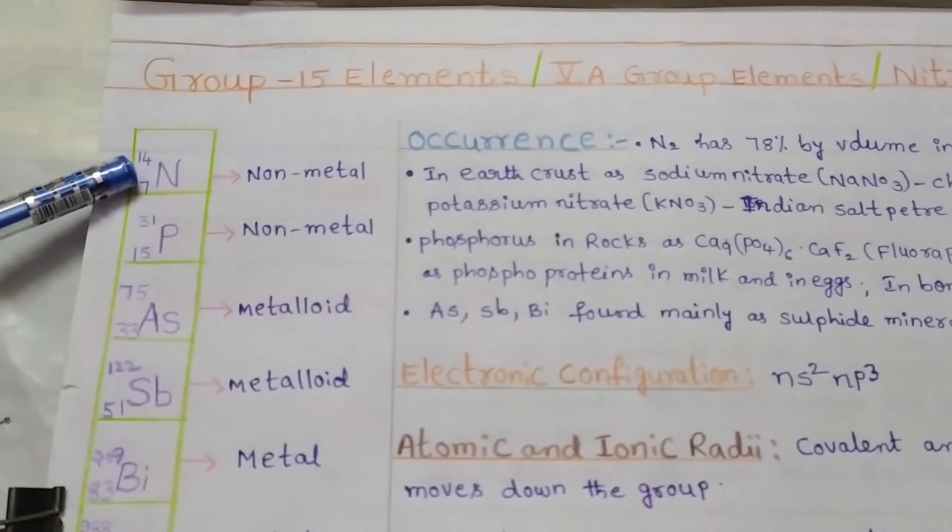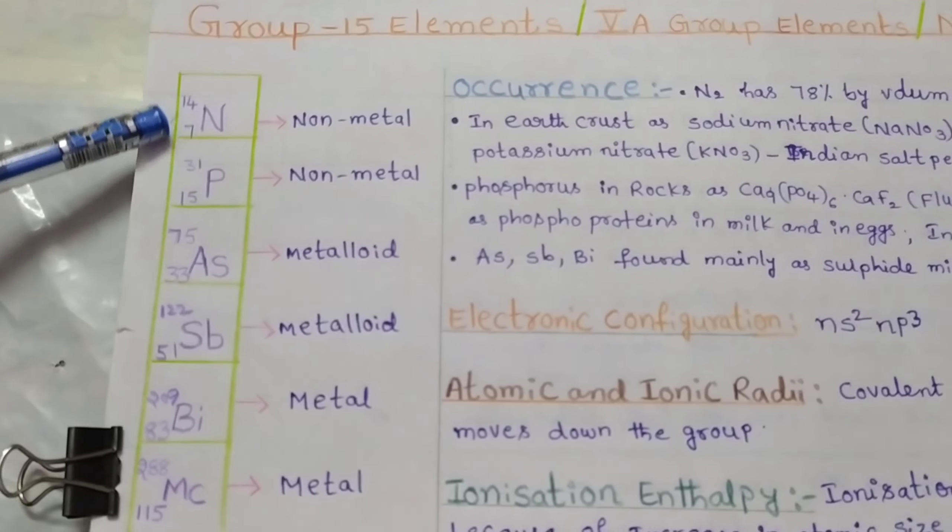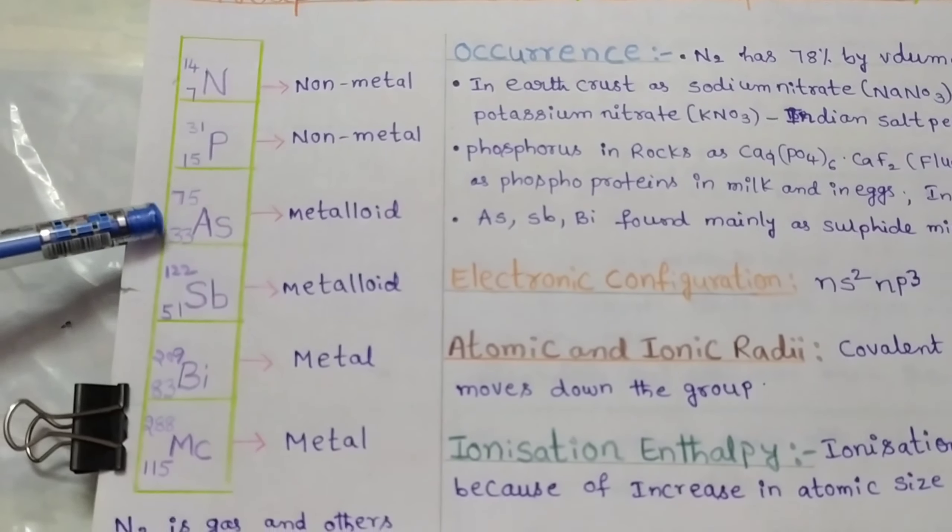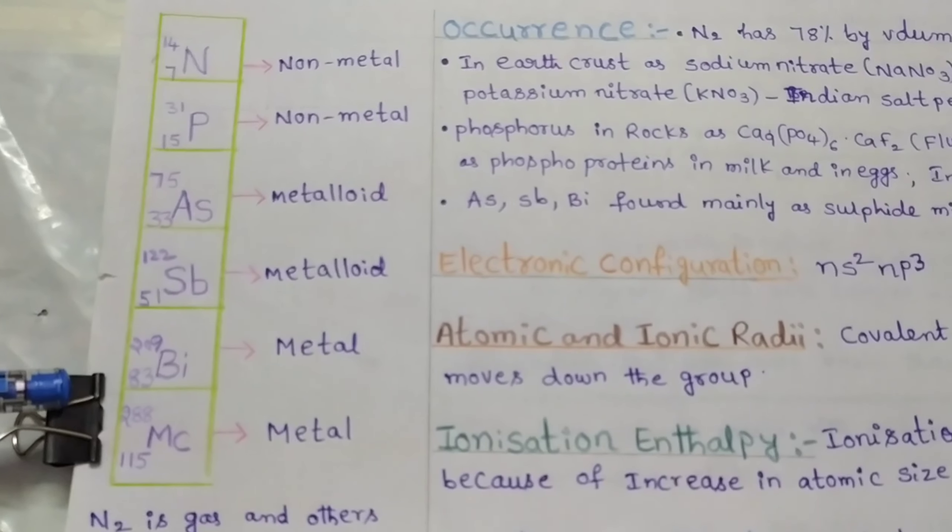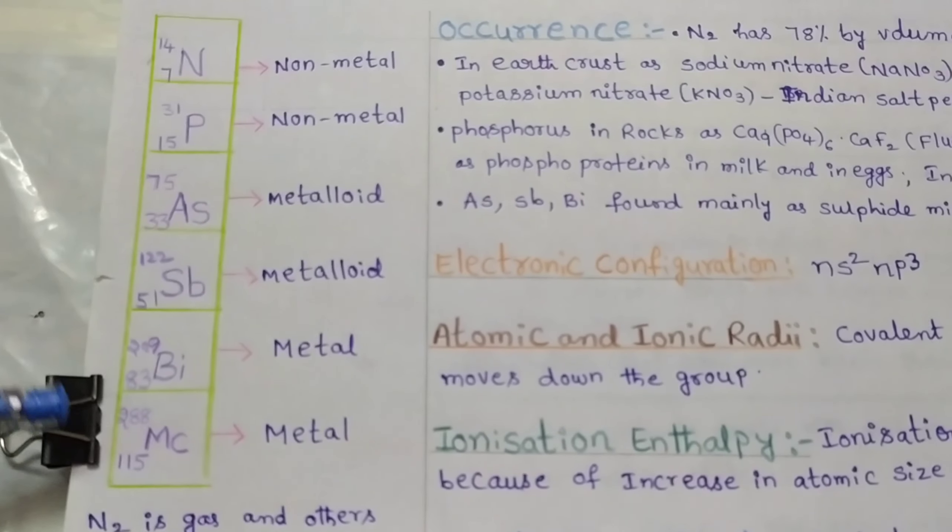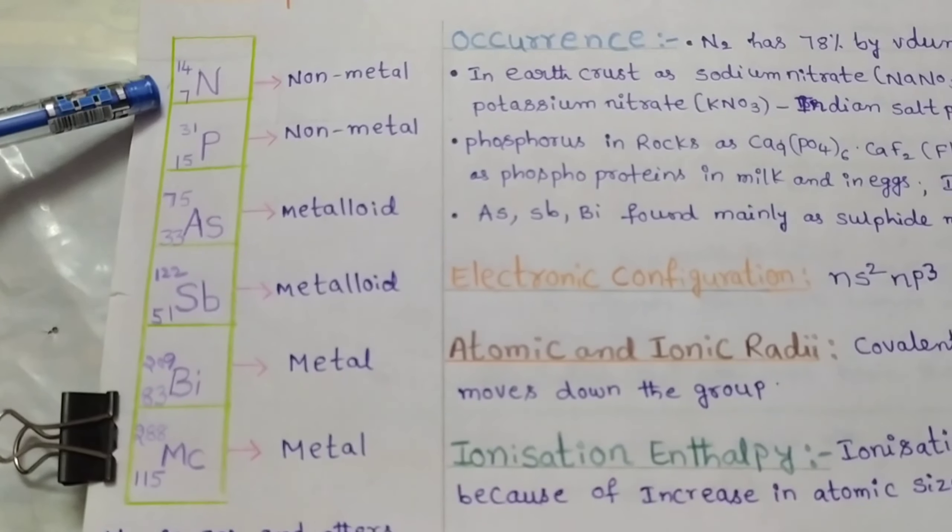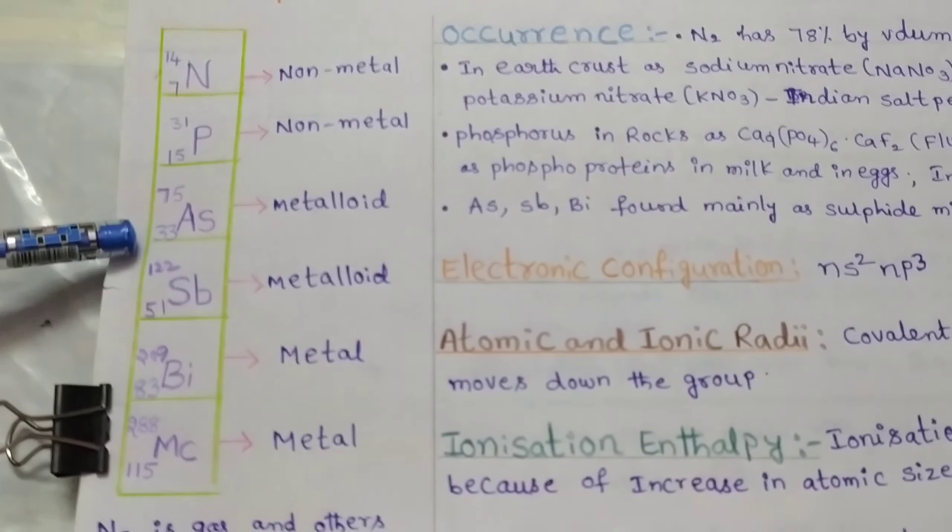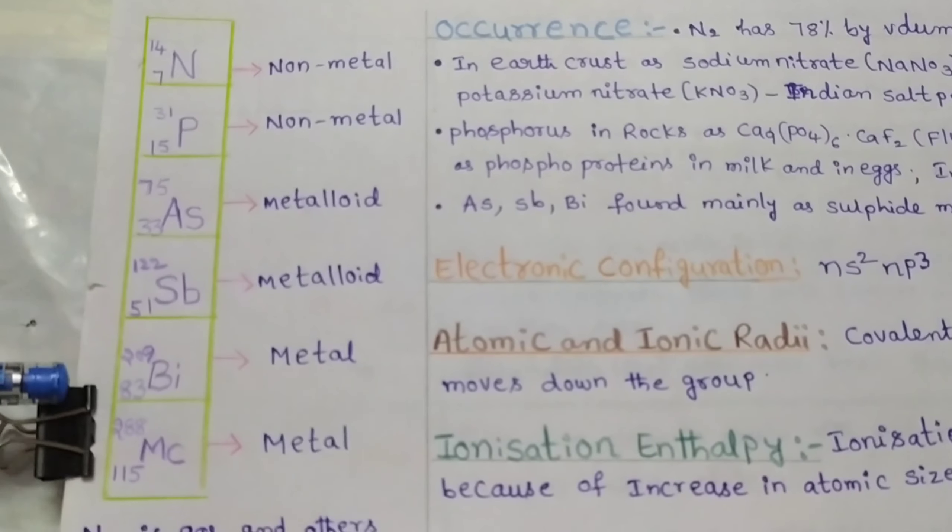The elements which are present in group 15 are nitrogen, phosphorus, arsenic, antimony, bismuth, and moscovium. Their atomic numbers are 7, 15, 33, 51, 83, and 115 respectively.